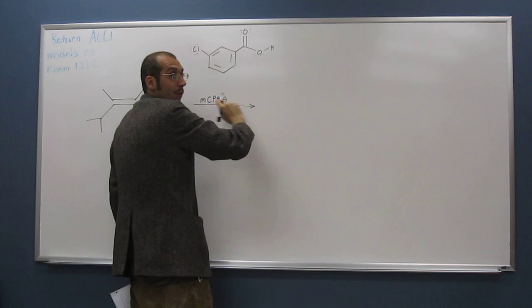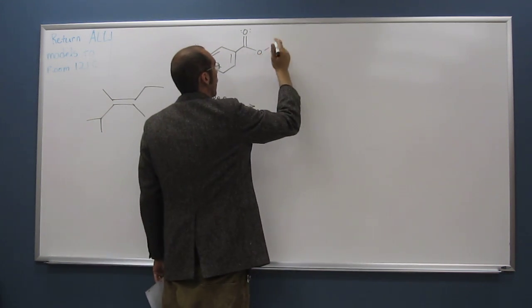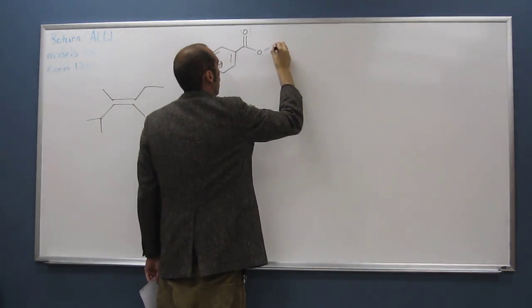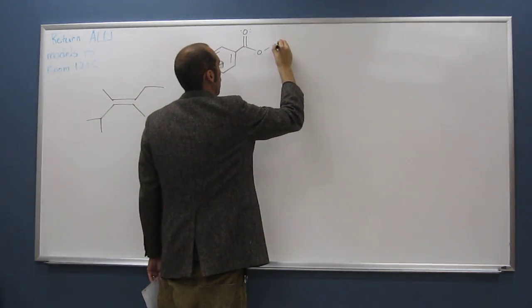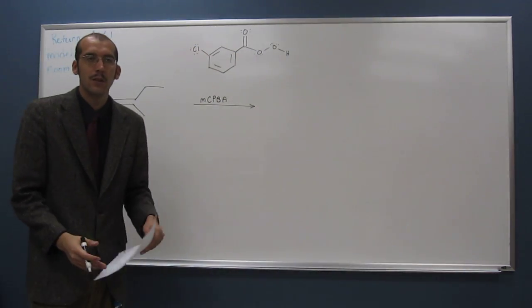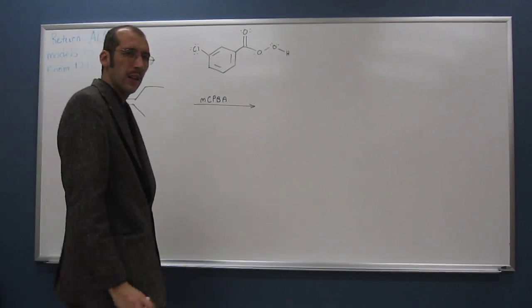But metachlorobenzoic acid would be that thing. The peroxy means that you've got a peroxide here. Like that. Okay? Peroxide is two oxygens bonded together. Peroxides will epoxidate alkenes.